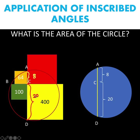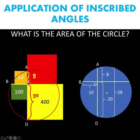Gathering this information in our simplified circle, we now have a length of 20 units and another length of 8 units, so the length of segment AD is equal to 28 units. Next, looking at chord BC: since the green square is 100 square units, the length of segment BC is the square root of 100, which is 10 units.